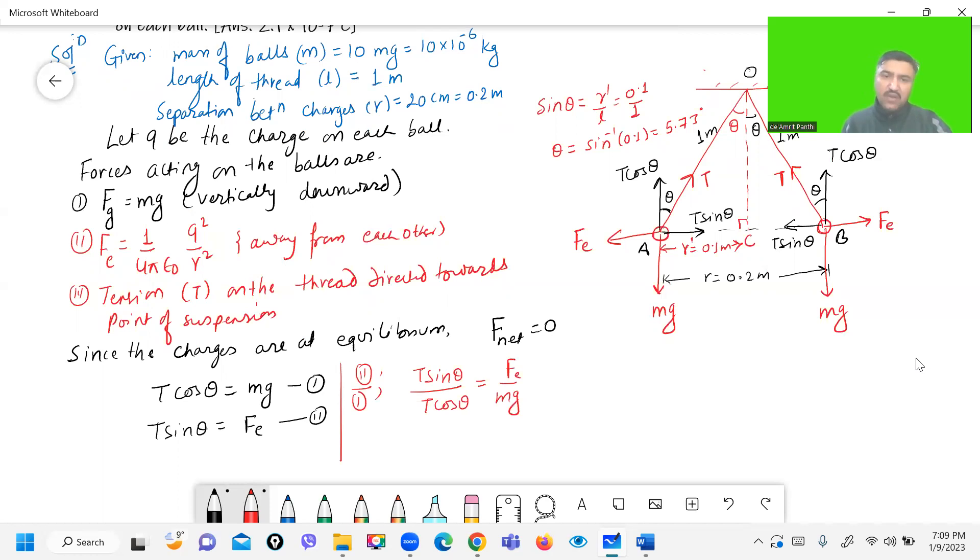So it will be equal to tan theta equal to Fe by mg. So then Fe, electrostatic force, is equal to mg tan theta.